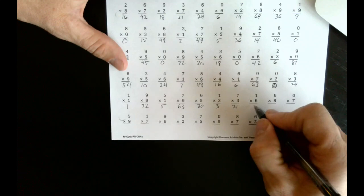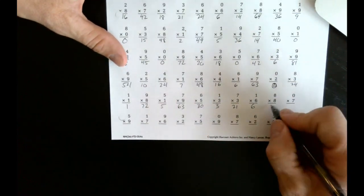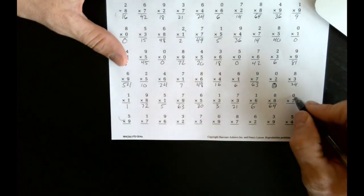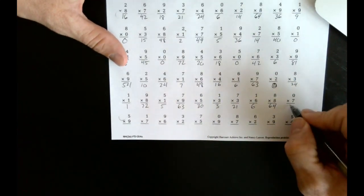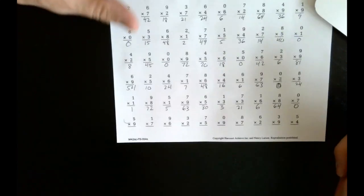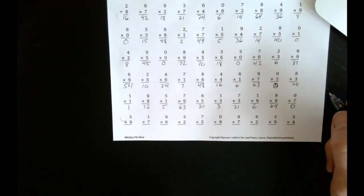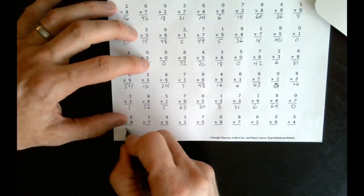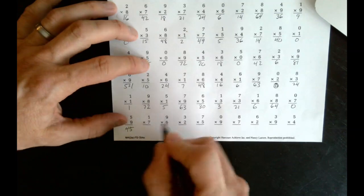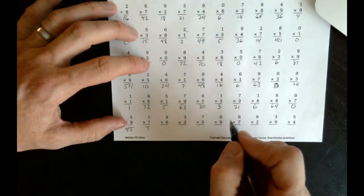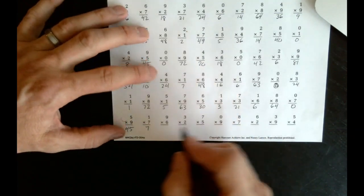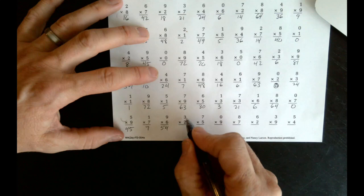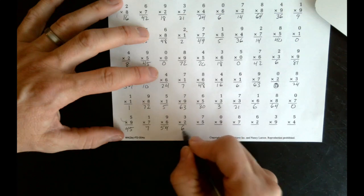1 times 6 is 6. 8 times 8 is 64. 0 times 7 is 0. 5 times 9 is 45. 1 times 7 is 7. 9 times 6 is 54. 3 times 2 is 6.